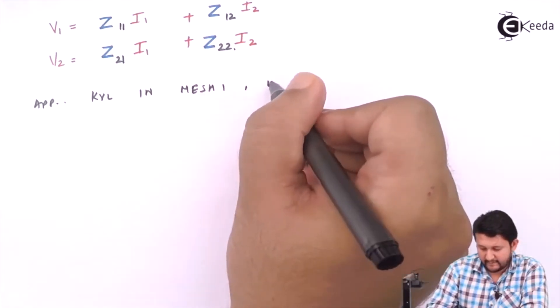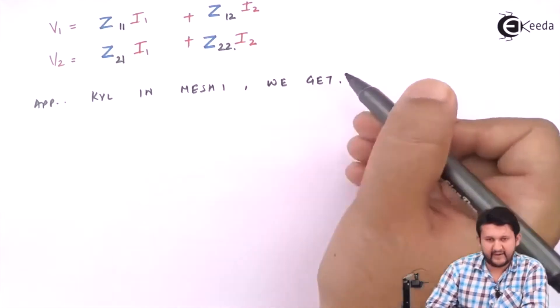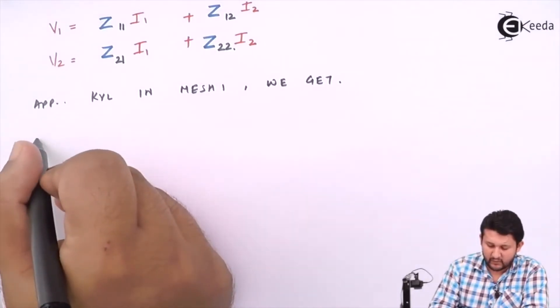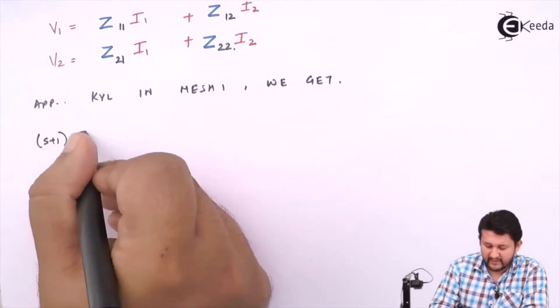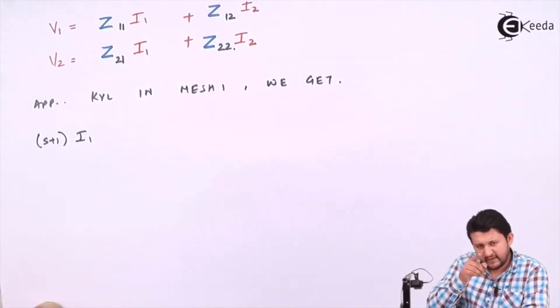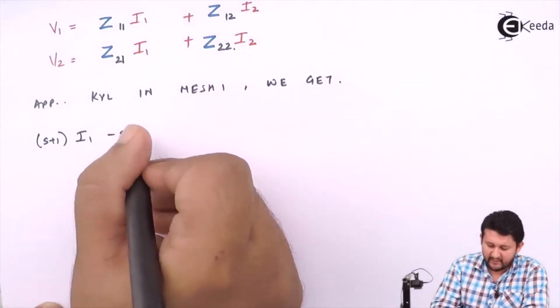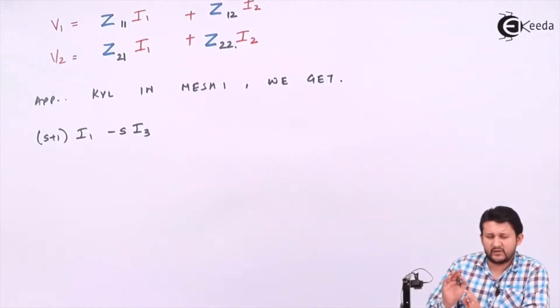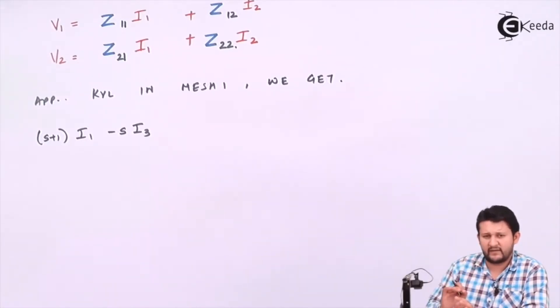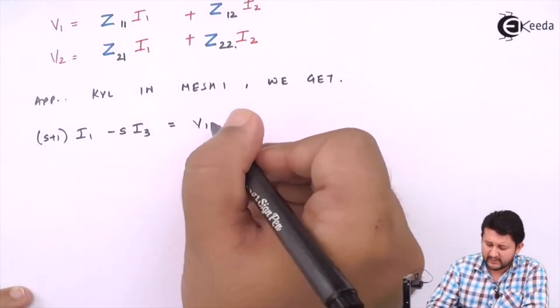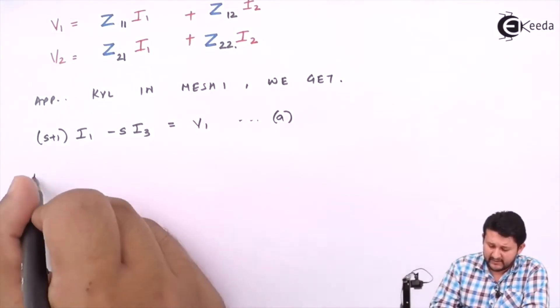Applying KVL in mesh 1, we get: In mesh 1, if I apply KVL, add the terms. So you have 1Ω plus 1s, that would be (s+1)I1. Check if there is any common current—yes, I3 is going. I1 and I3 have opposite directions, so the sign will be minus sI3. Remember, this chapter you should solve only after solving chapter number one, which is the basis for applying KVL.